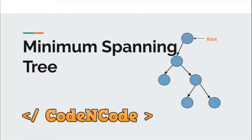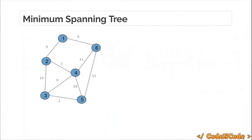Hello guys, this is CodeEncode and this is the first lecture of the Graph Theory Part 2 series. In this lecture we are going to study minimum spanning trees. So what is a minimum spanning tree? You are given a weighted graph — that is, each edge has certain weights.